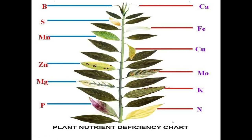If zinc is not supplied properly it results in spots on the leaf. If iron is not supplied, the leaf will be discolored. If nitrogen is not supplied properly it will result in poor growth — leaves become pale green or yellow because the plant is unable to make sufficient chlorophyll.